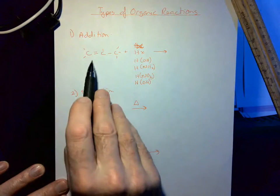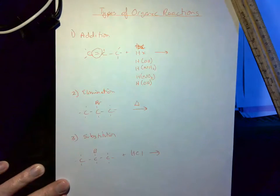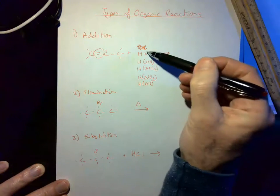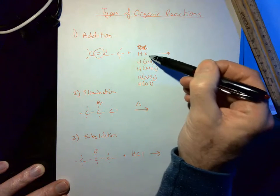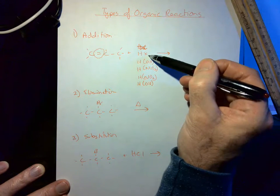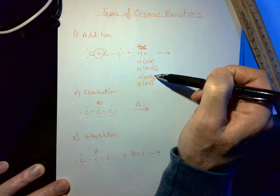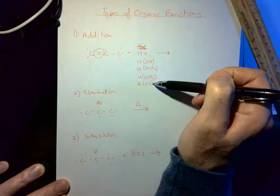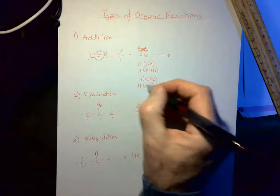If you have an addition reaction, you're going to start with a double bond in the carbon chain. When you do that, you're going to add something - it's going to be H plus something. H plus X is anything from group 7: bromine, fluorine, chlorine, iodine. HOH which is water, NH2 which is NH3, HNO2 nitric acid, and... oh I got water down twice.